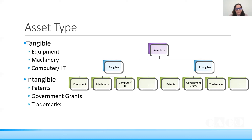Examples of tangible assets include equipment, machinery, computers, and IT hardware — things with a physical or monetary value. Intangible assets include patents, government grants, and trademarks. For example, if an organization sells a particular sector or wing, the patents and trademarks attached to it carry an indirect value. That is the key difference between tangible and intangible assets.